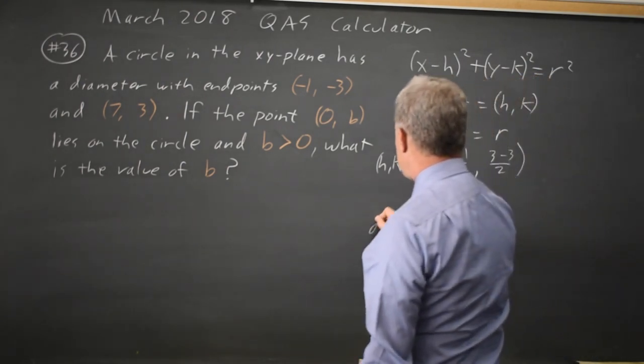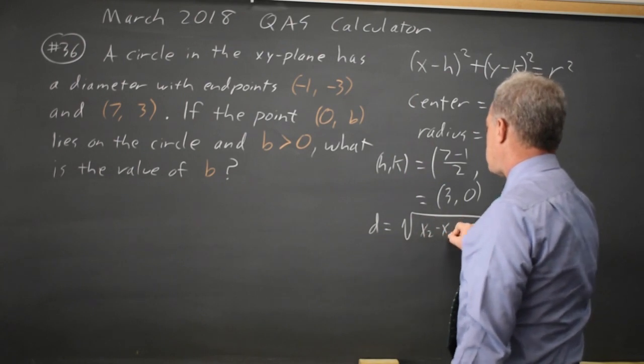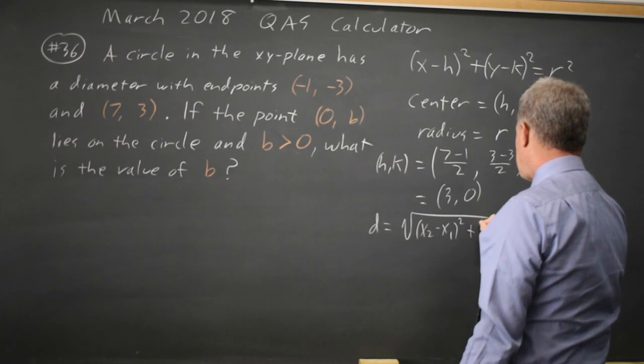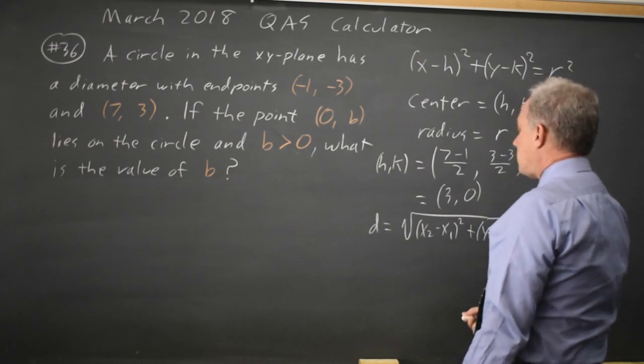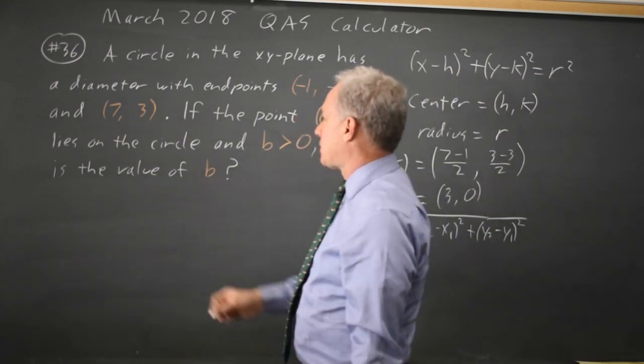And our distance formula is square root of x2 minus x1 squared plus y2 minus y1 squared, where x2 will be a point on the circle, such as 7, 3.